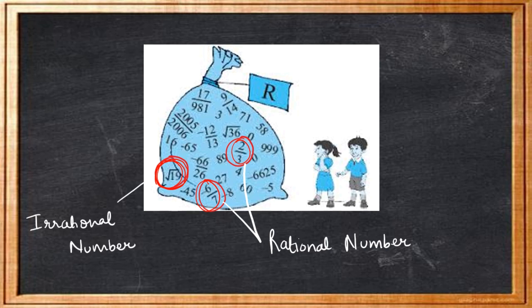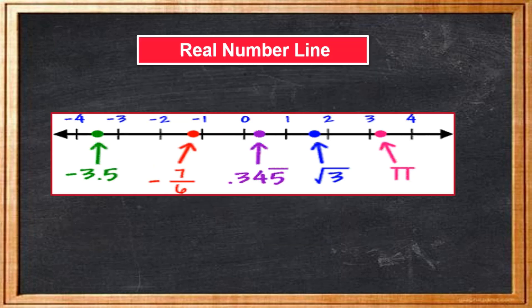The collection of all rational numbers and irrational numbers together make up what we call the collection of real numbers, which is denoted by capital R. Therefore, a real number is either rational or irrational. We can say that every real number is represented by a unique point on the number line. Also, every point on the number line represents a unique real number.